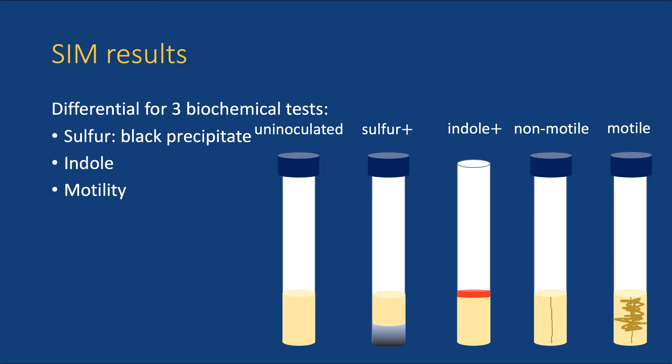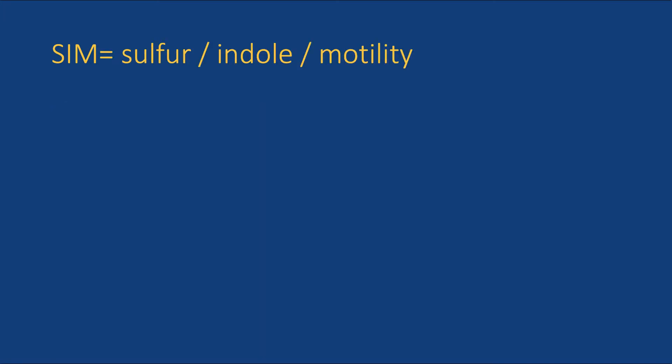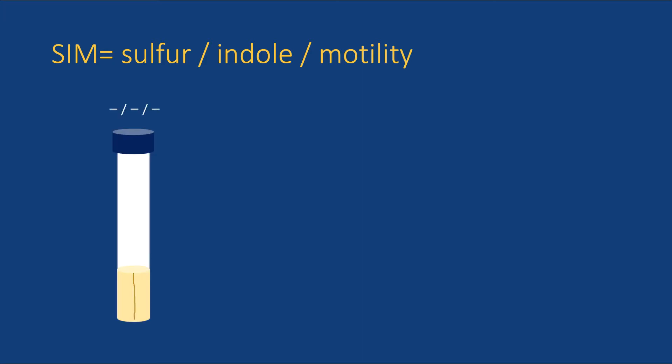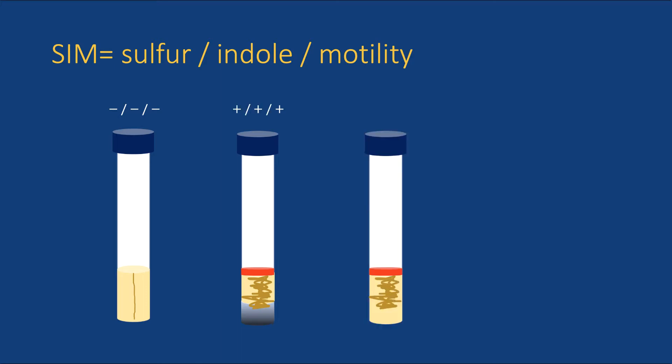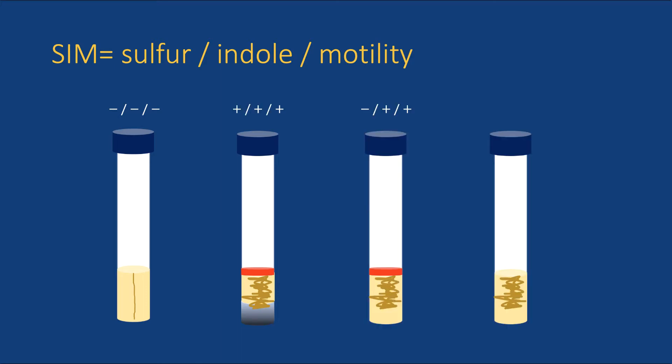The results of the SIM test are reported in the order Sulfur-Indole-Motility. These are three independent differential tests, so it's possible to have negative-negative-negative bacteria — those that cannot reduce sulfur, do not produce indole, and are non-motile. But all combinations are possible: positive-positive-positive, or negative-positive-negative, or negative-negative-positive — you get the idea. In your case, you should put a question mark in the center since you will not be using indole.